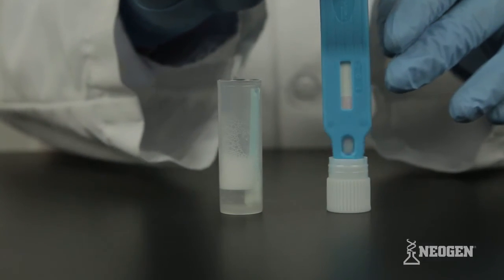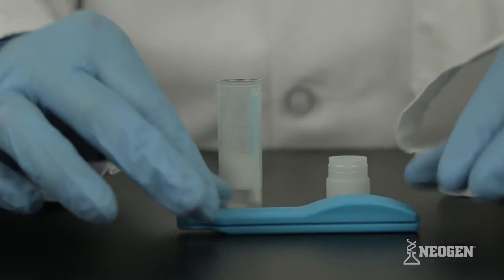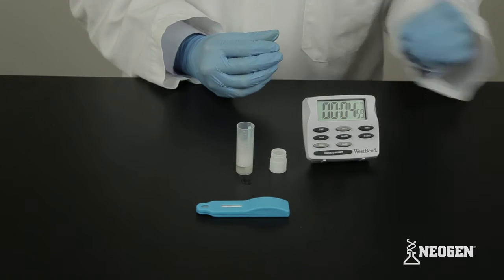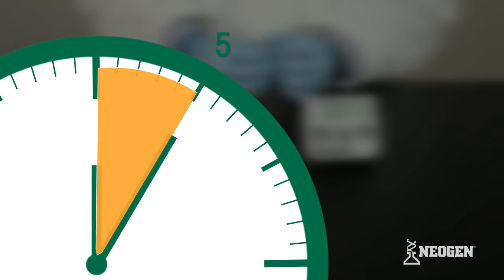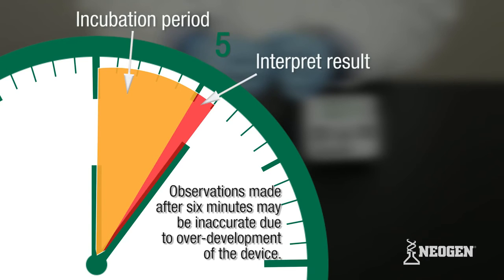As soon as the liquid has entered the test window, place the device flat on a level surface. It is essential that the device lays flat on the level surface, as this stimulates flow through the device. Set the timer for five minutes. Interpret the test results within one minute of the completion of the five minute incubation period. Observations made after six minutes may be inaccurate due to overdevelopment of the device.